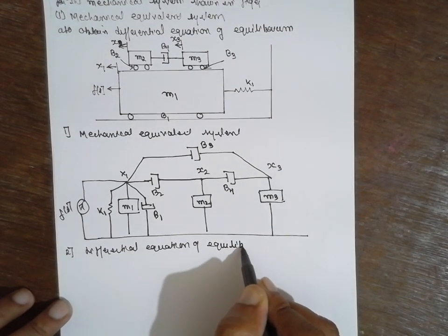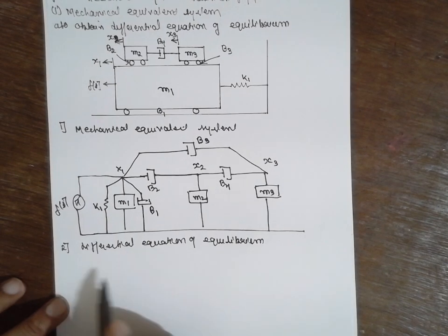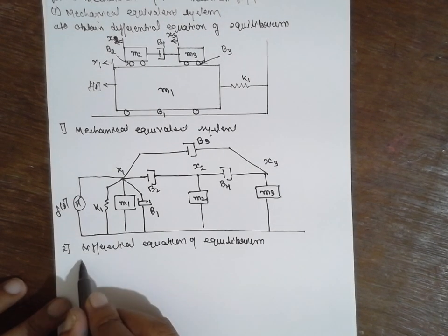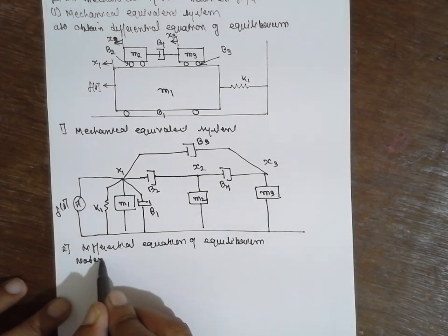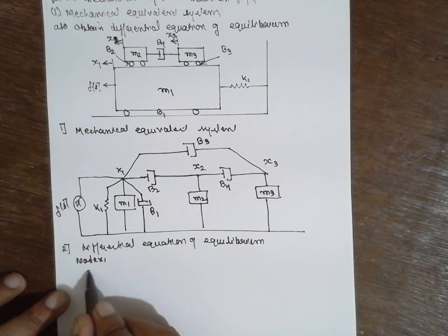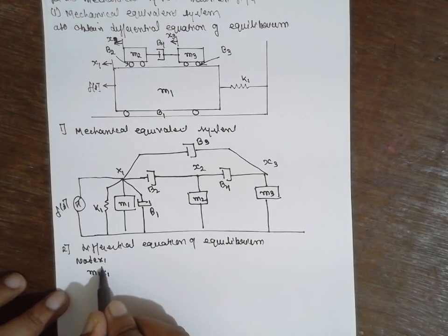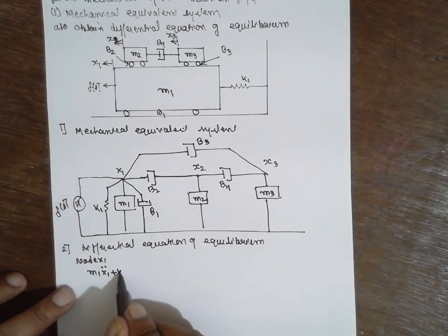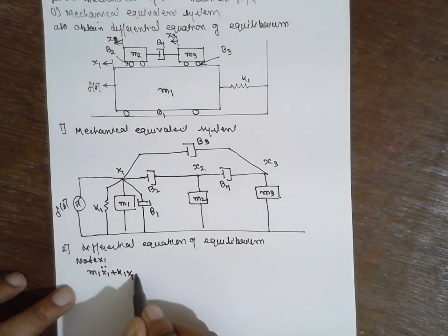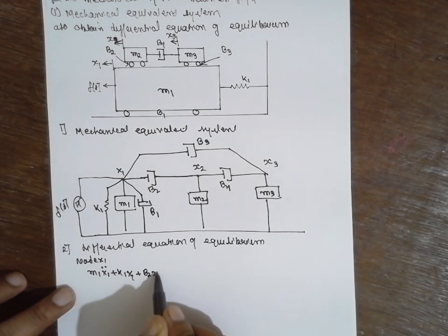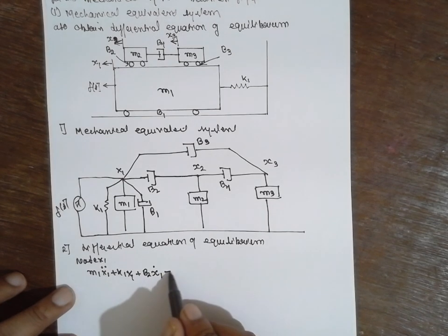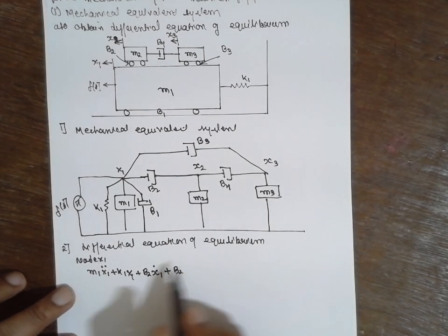We will write the differential equation for node X1: m1·ẍ1 + k1·x1 + b1·ẋ1 + b2·(ẋ1 - ẋ2) = F(t).